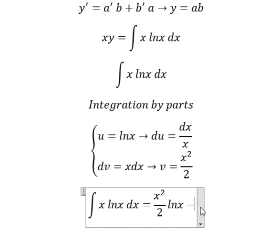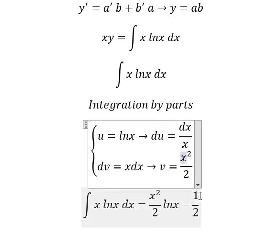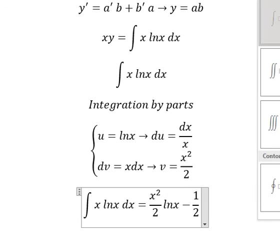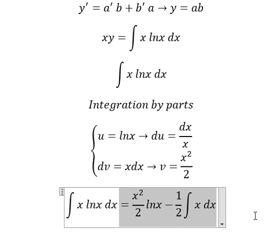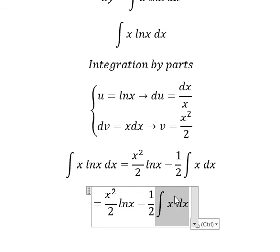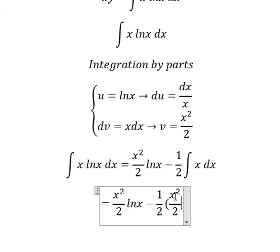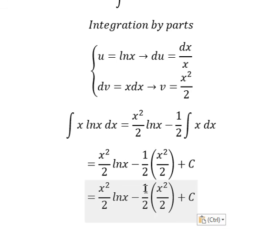...minus the integral of v·du. That gives us (s² / 2)·ln(s), and integrating s over s gives s² over 2, then multiplied by 1/2 gives us 1/4 s². Adding the constant C we get s²·ln(s)/2 minus s²/4 plus C.